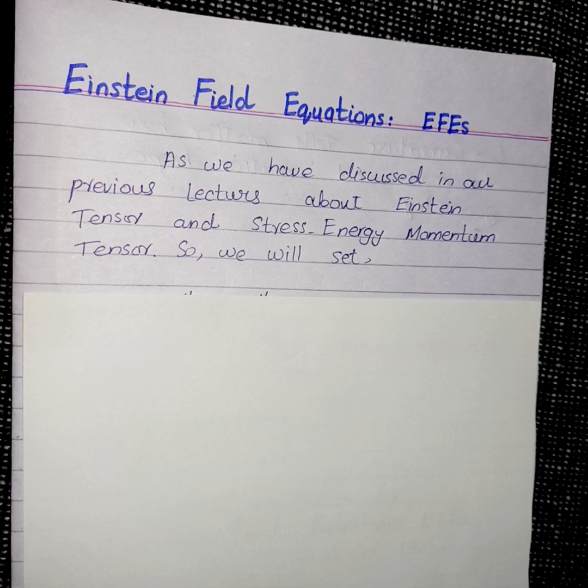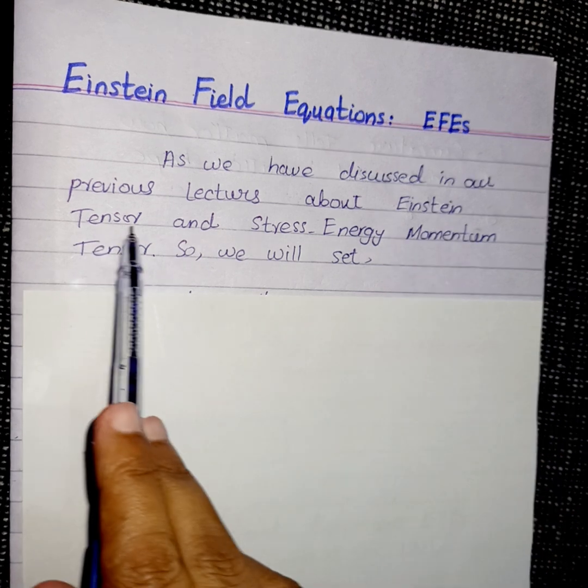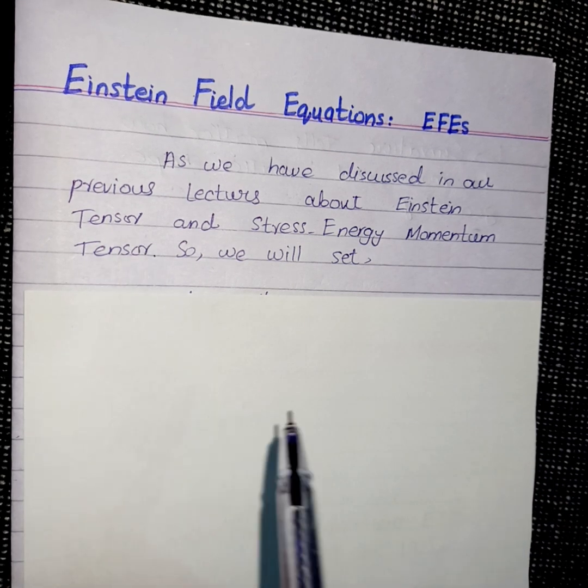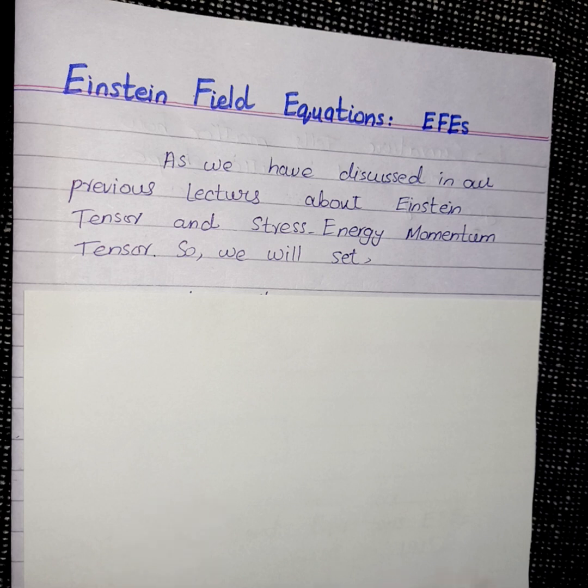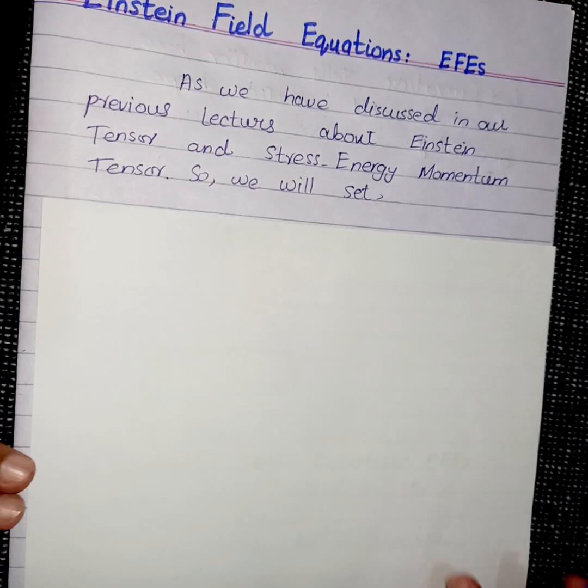So if we take the divergence of a stress energy momentum tensor, you know that it is divergence free, means its divergence is equal to zero. Also, if we take the divergence of an Einstein tensor, that is also equal to zero. That's why Einstein chose this tensor, the stress energy momentum tensor.